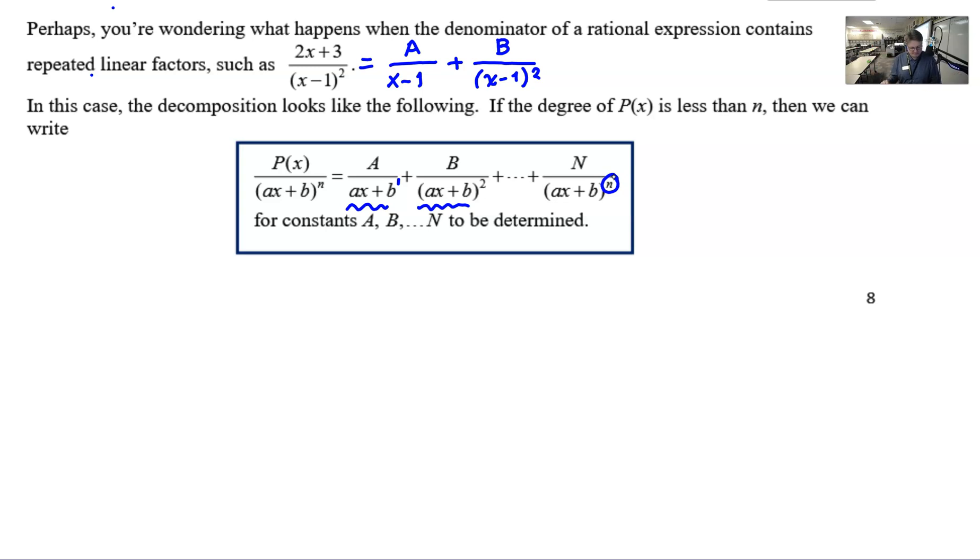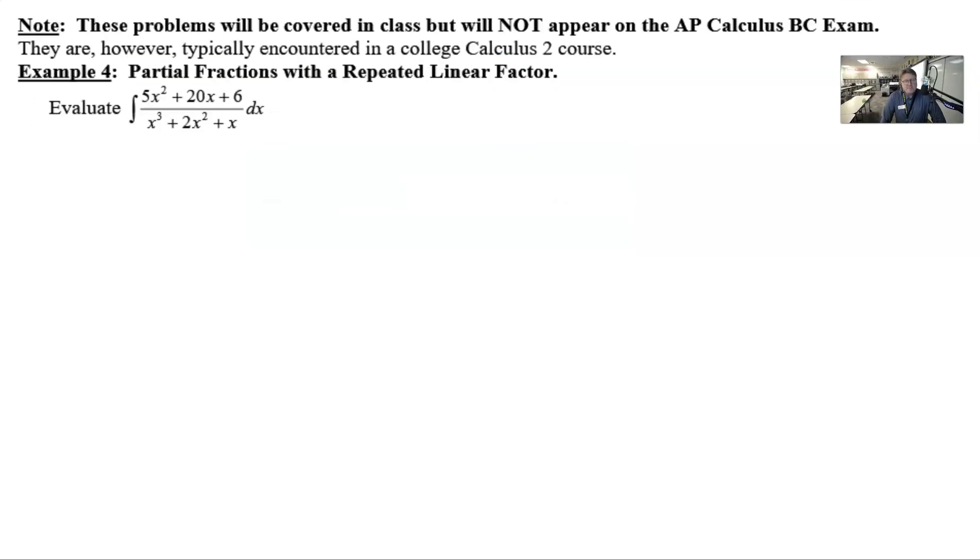Let's go ahead and look at the example. So here's our example 4. Remember, as I said before, this type of problem will not be tested on the AP Calculus BC exam, but it is typically encountered in a Calculus 2 classroom. The first thing we're going to do is factor our denominator. The numerator, if it were to factor, doesn't really lead to anything. There is one exception to that: if both the numerator and denominator would factor and have a common factor that would cancel, you could make the problem a little bit easier. But that is not going to happen in this particular case.